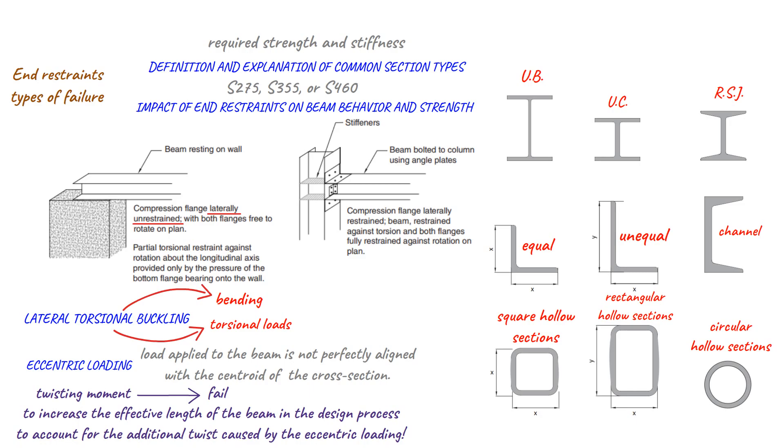In addition to their impact on beam behavior, end restraints also have an important effect on the strength of the beam. If there is no lateral restraint at the end of the beam, its effective length, which is used for strength calculation purposes, is considered to be greater than its actual length.